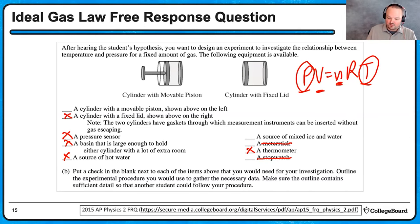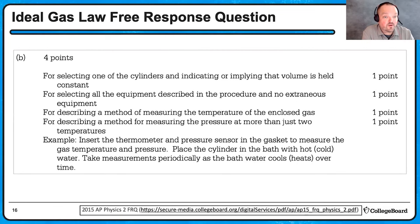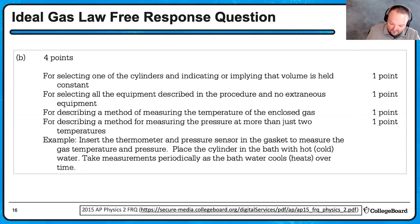Looking at the rubric points for part B: first, selecting the cylinder with fixed volume; second, selecting only the relevant equipment; third, describing a method of measuring the temperature using the thermometer. The fourth point — which appears on every experimental design question — always explicitly say you're going to vary the independent variable. I'd say: I'm going to record the temperature at 10 different temperatures and record the pressure at each of those 10 temperatures. Just say 10 — the rubric says more than just two, so 10 is super clear that you're going to use lots of data points.